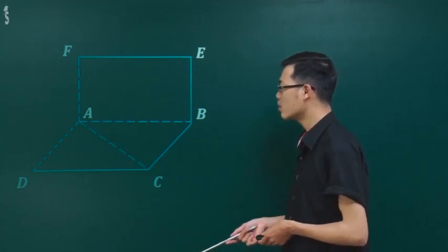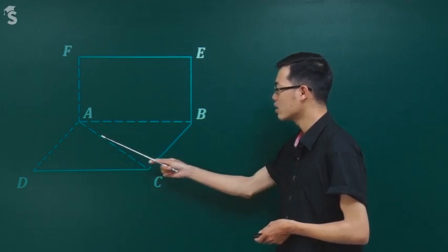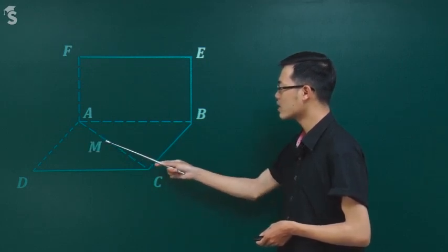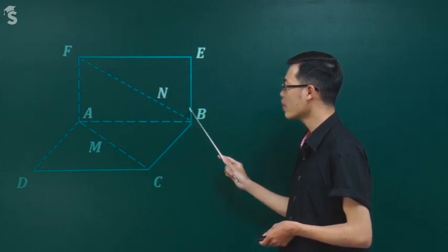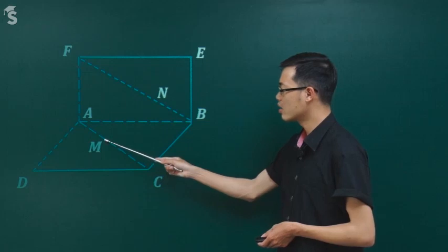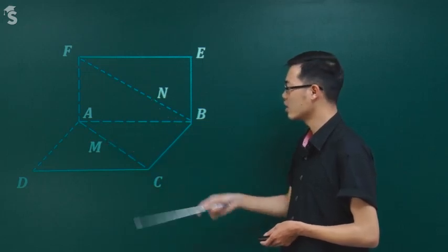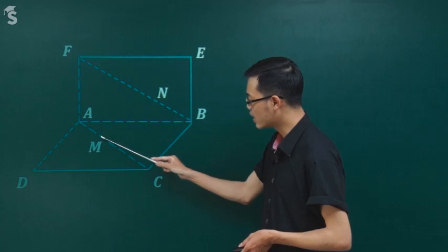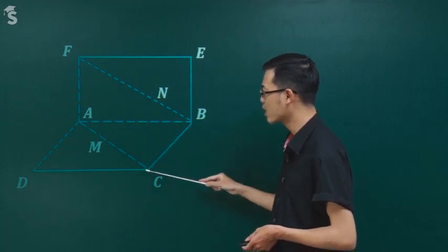Cách vẽ này cũng chính là một cách nói khác của việc vẽ lăng trụ. Đây là lăng trụ tam giác, nhưng lăng trụ này không thẳng đứng mà nằm ngang ra. Chúng ta lấy M và N lần lượt: M thuộc AC và N thuộc BF sao cho AM = BN.